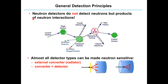The first principle is that neutron detectors do not detect neutrons but rather the products of neutron interaction. It means that neutrons are first made to interact with neutron-sensitive materials. The neutron-sensitive materials are those which have a larger cross-section for thermal neutrons, and which produce charged particle nuclei by interactions with thermal neutrons. This is the first principle.